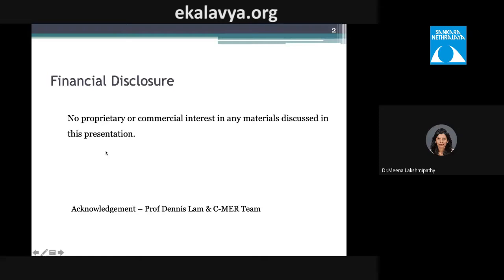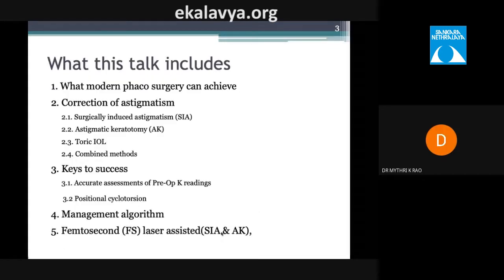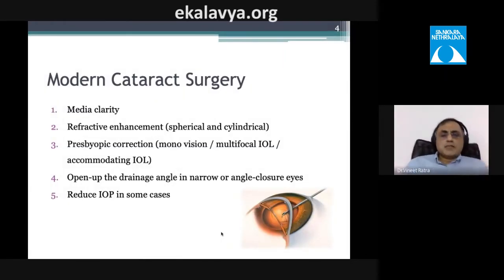This talk covers what modern phaco surgery can achieve, how we correct astigmatism using surgically induced astigmatism, astigmatic keratotomies, and toric IOLs — when to use them, the keys to success, the management algorithm, and the role of laser astigmatic correction.